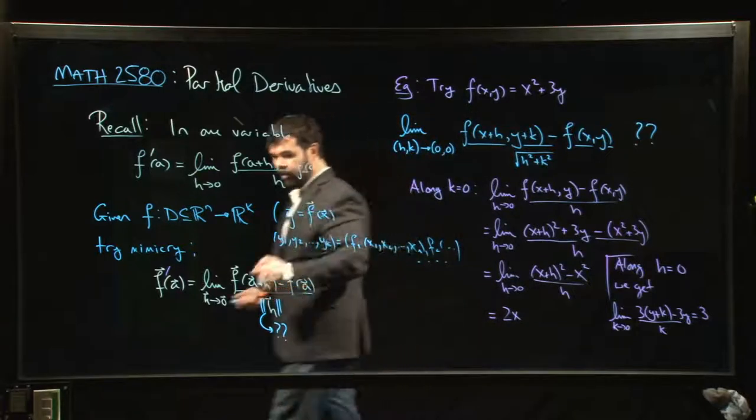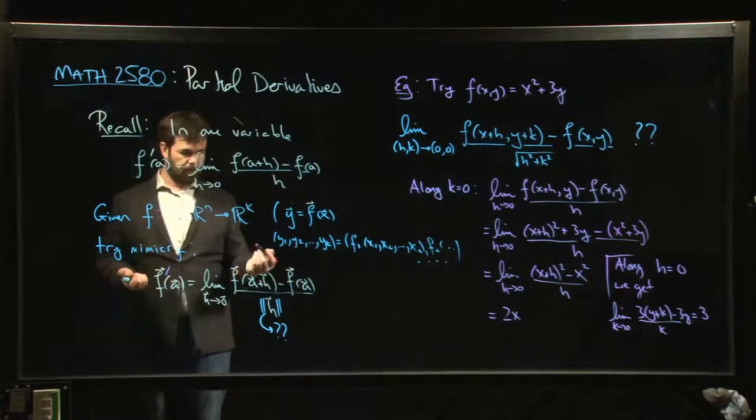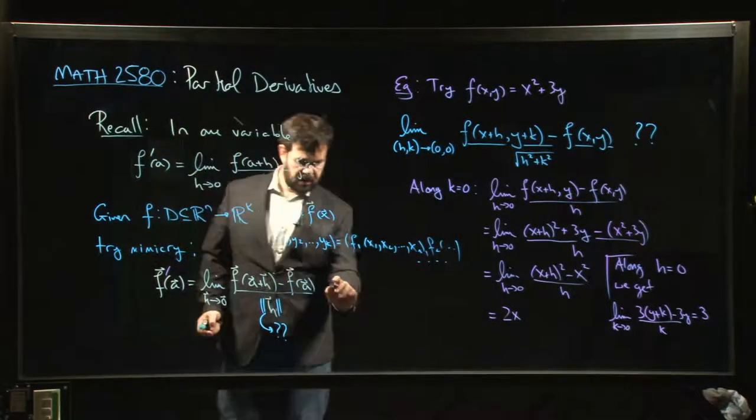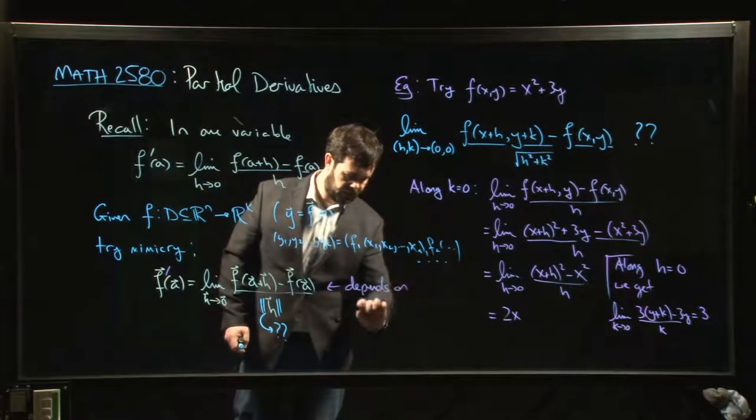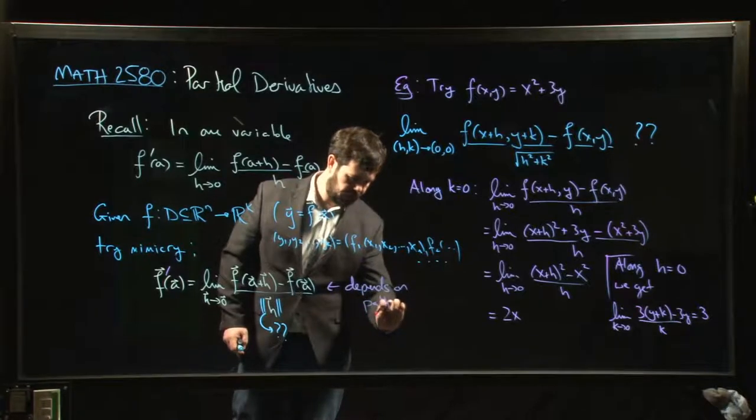And so for pretty much all values of x, 3 and 2x are different answers. And so you can see that this doesn't work. It depends on the path. In fact, it's highly dependent on the path.